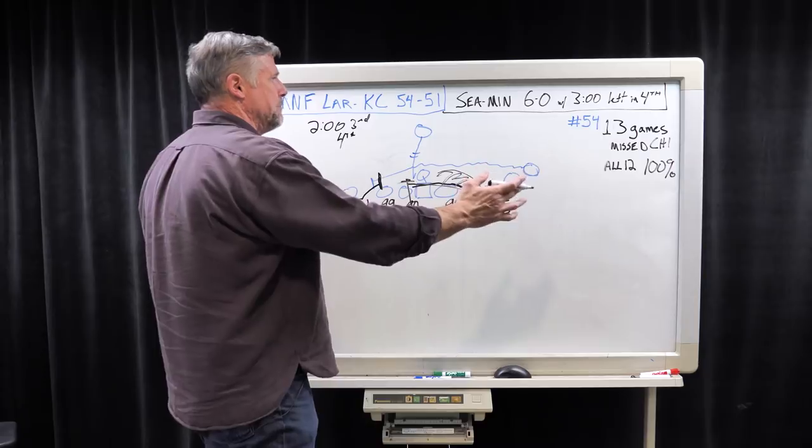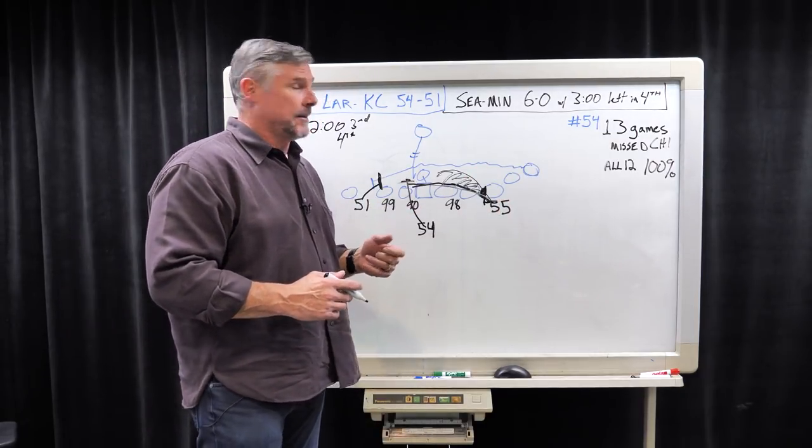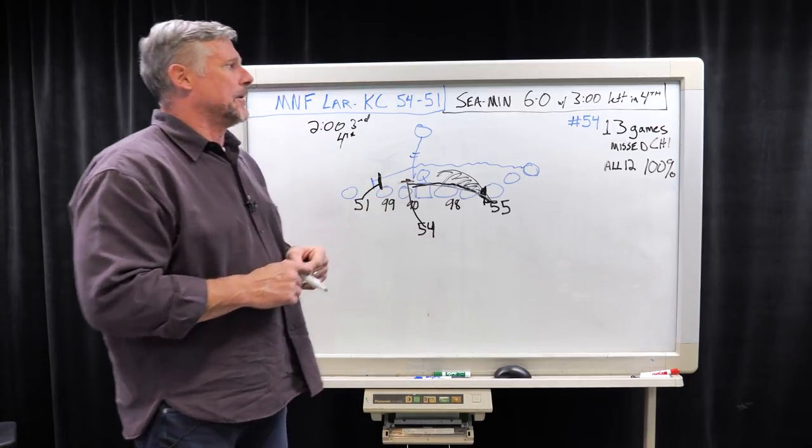And then Bobby comes and just finishes the whole thing off with another great hit, and again, his pad level lower than the running back. So, if you want to, what was the big mystery? How did they win this game? It was a lot of that, and I thought the defense really won this game for him, holding him to seven points.